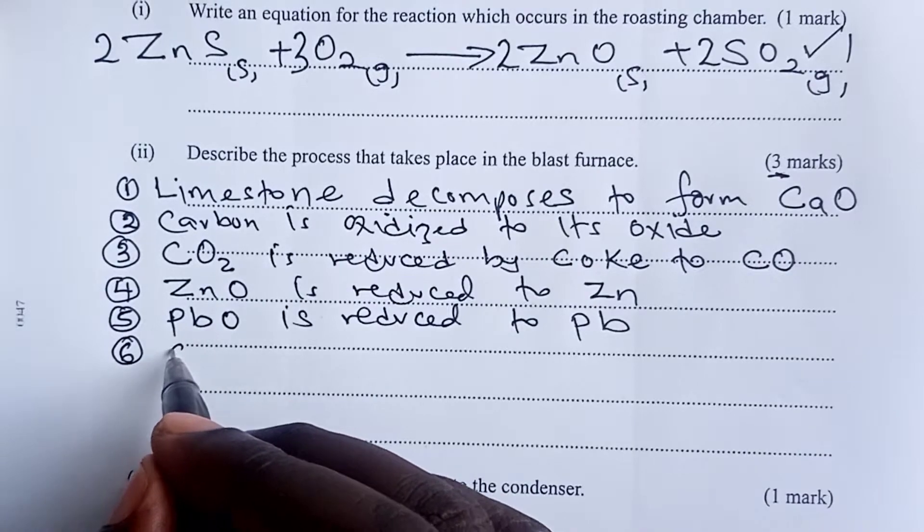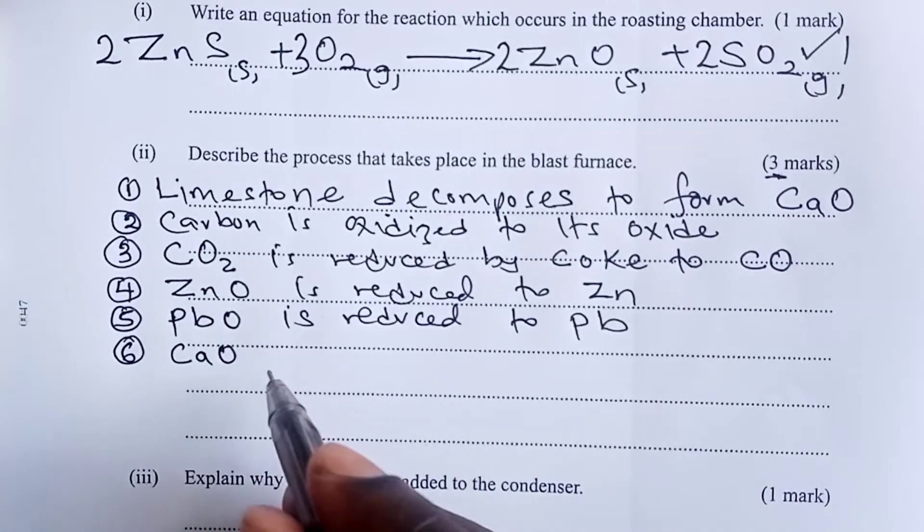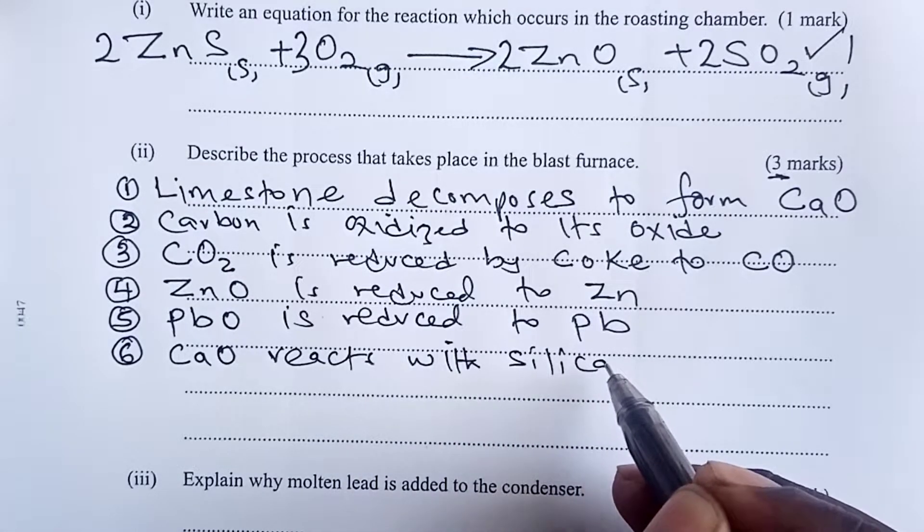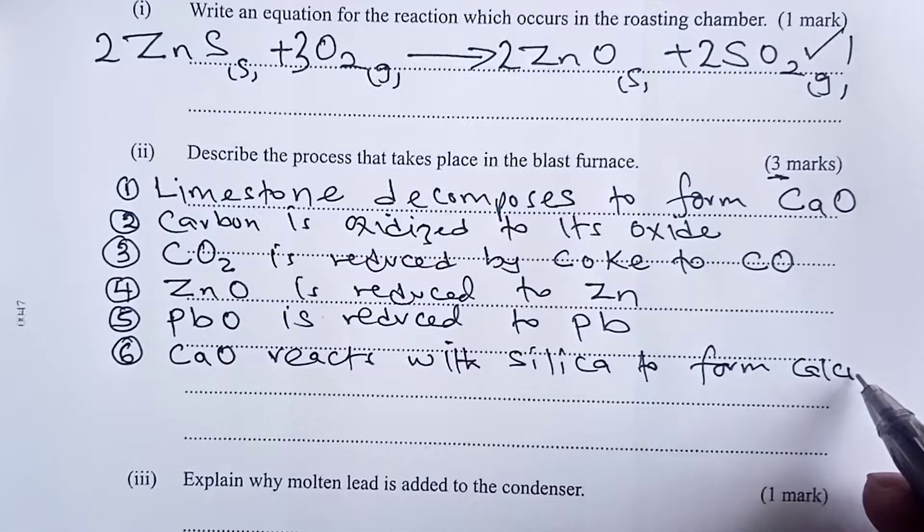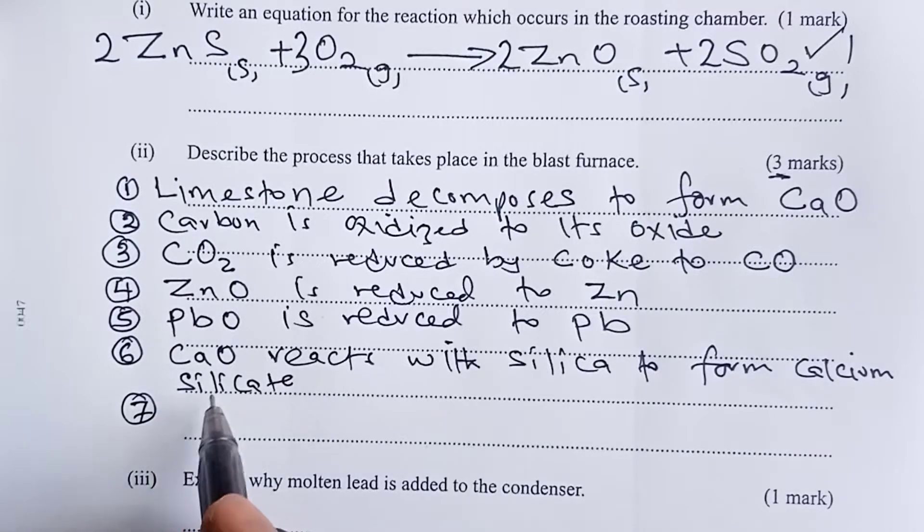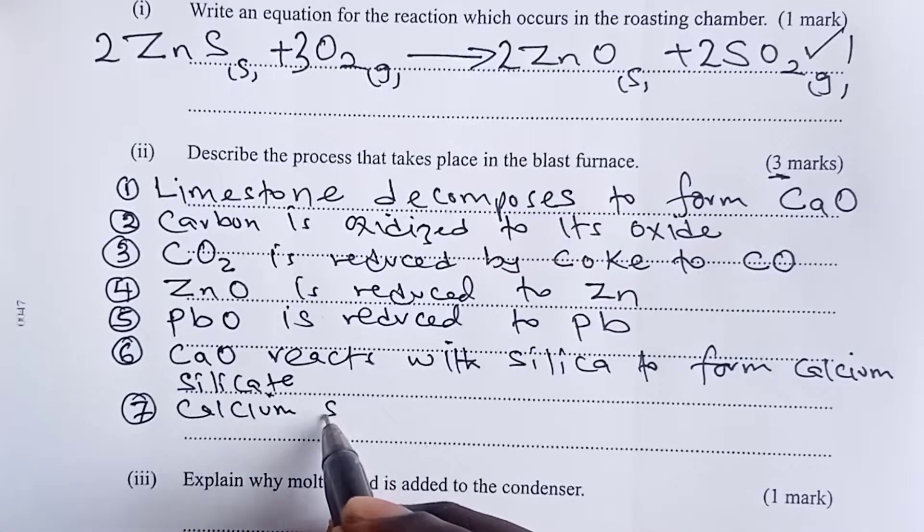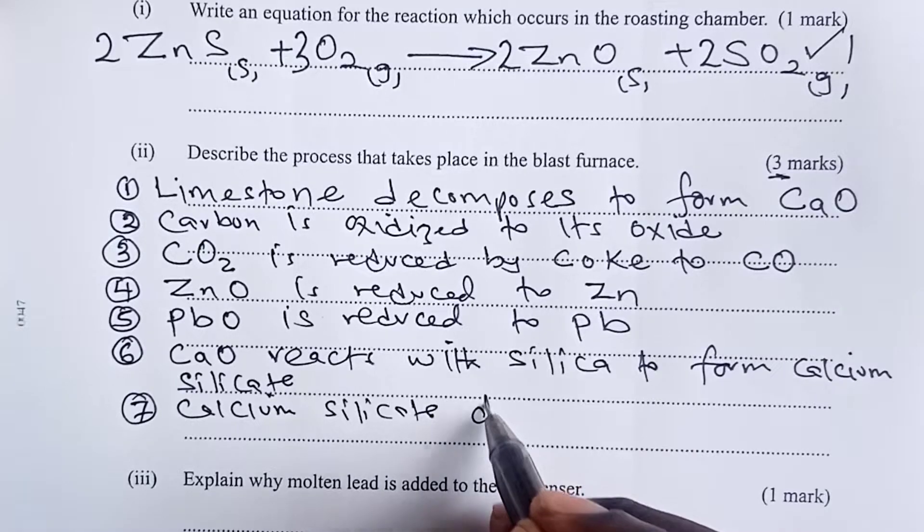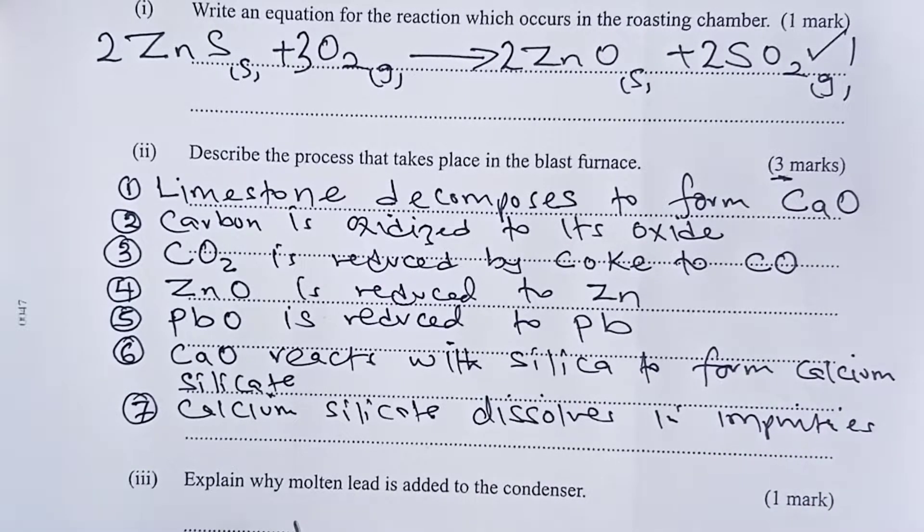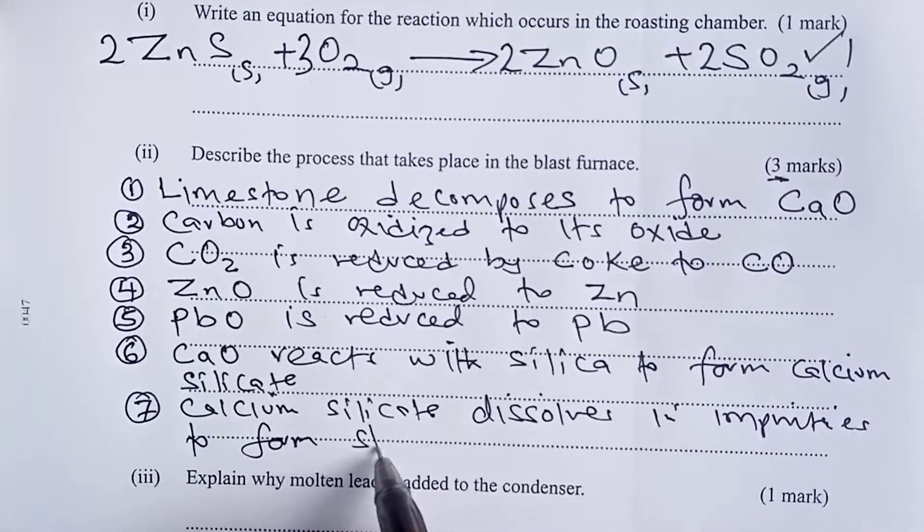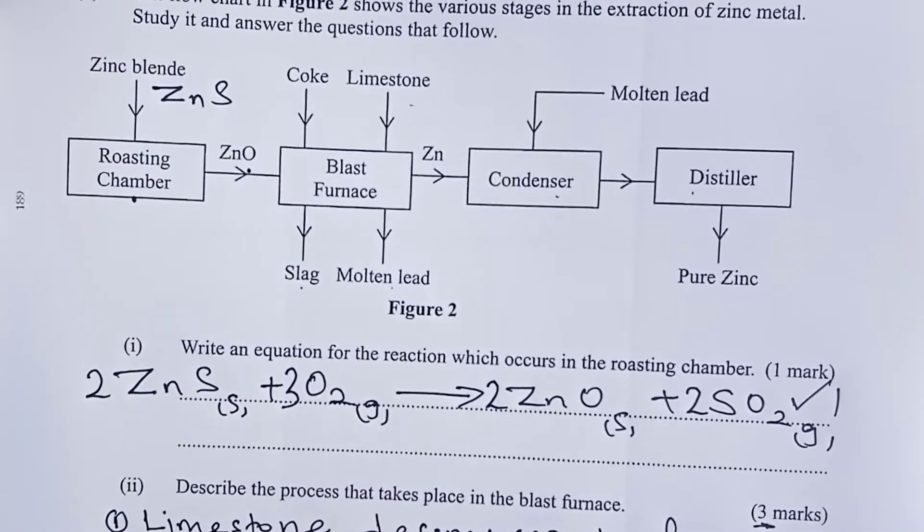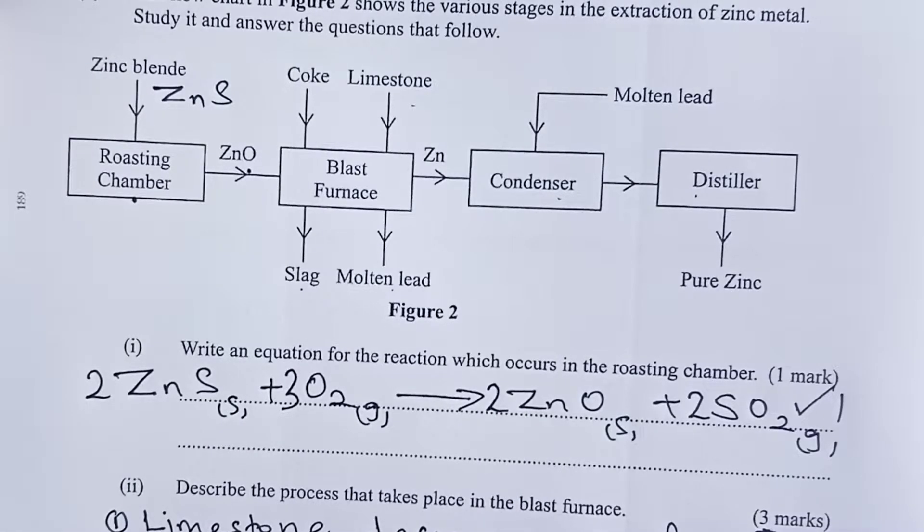Sixth process is that calcium oxide, having been obtained from decomposition of limestone, this will react with silica to form calcium silicate. And then the last process that happens here is that the calcium silicate formed dissolves in the impurities to form slag. So all these processes summarize what is happening in the blast furnace at this point.